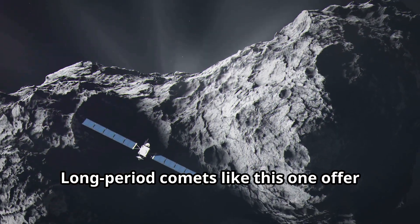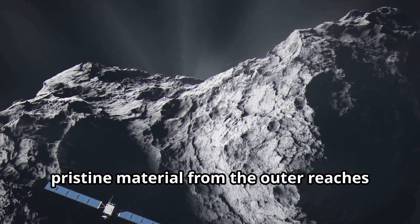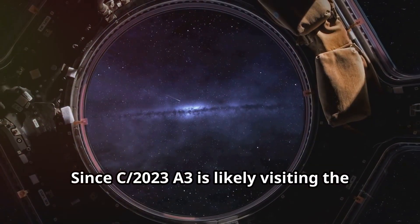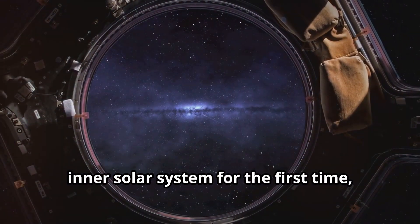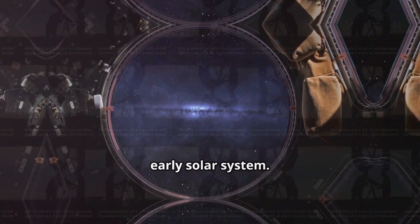Long-period comets like this one offer scientists an opportunity to study pristine material from the outer reaches of the solar system. Since C/2023 A3 is likely visiting the inner solar system for the first time, its nucleus could provide valuable information about the composition of the early solar system.